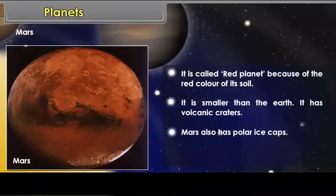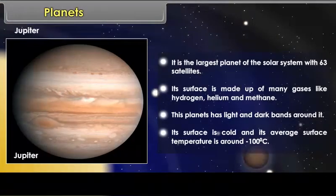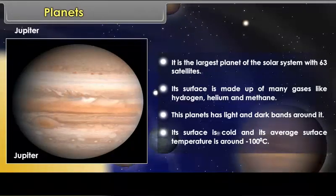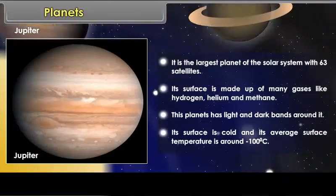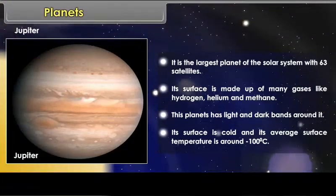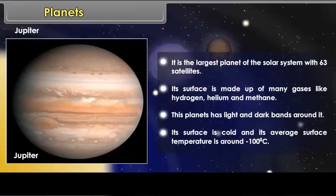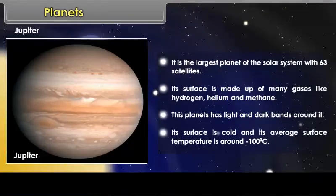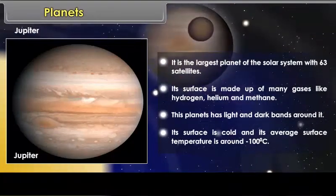Jupiter. Its surface is made up of many gases like hydrogen, helium and methane. This planet has light and dark bands around it. Its surface is cold and its average surface temperature is around minus 100 degrees Celsius.